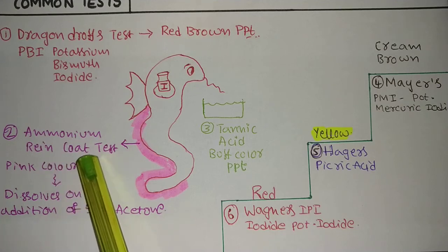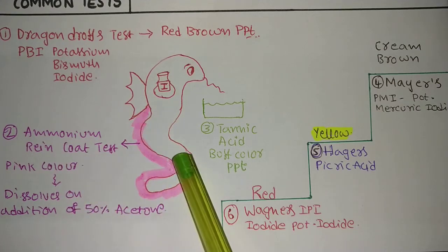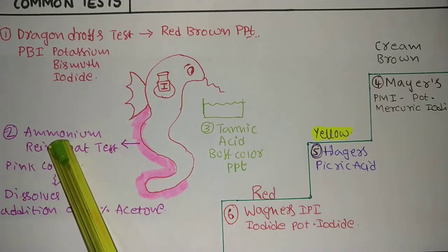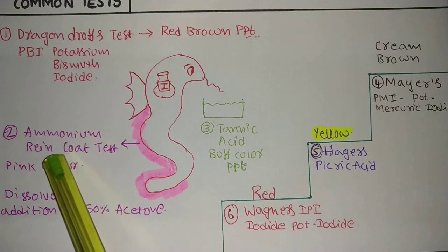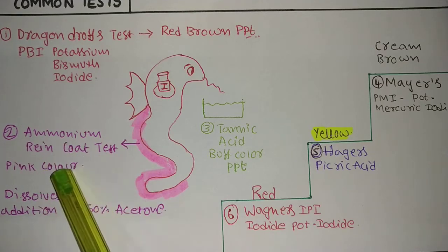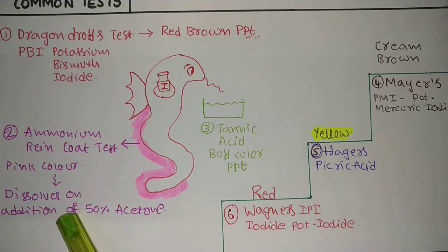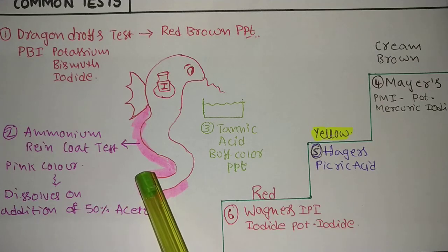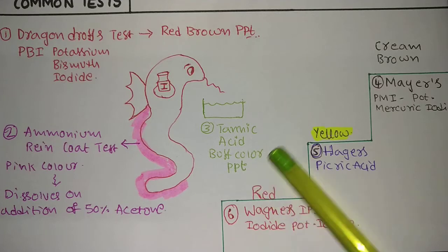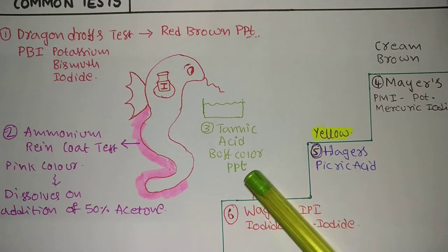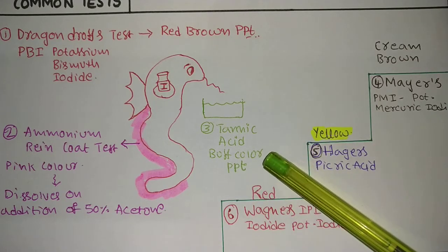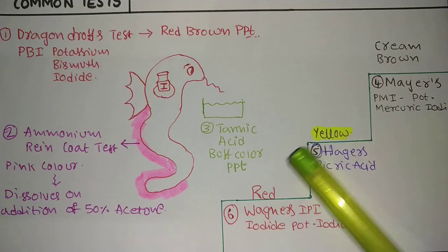Ammonium Reineckate test — remember 'raincoat.' I showed a pink color raincoat to the dragon — that's enough to remember. Ammonium Reineckate test gives a pink color precipitate. That pink color will disappear when 50% acetone is added to the precipitate. The third test is tannic acid test — you will get a buff color precipitate with tannic acid.